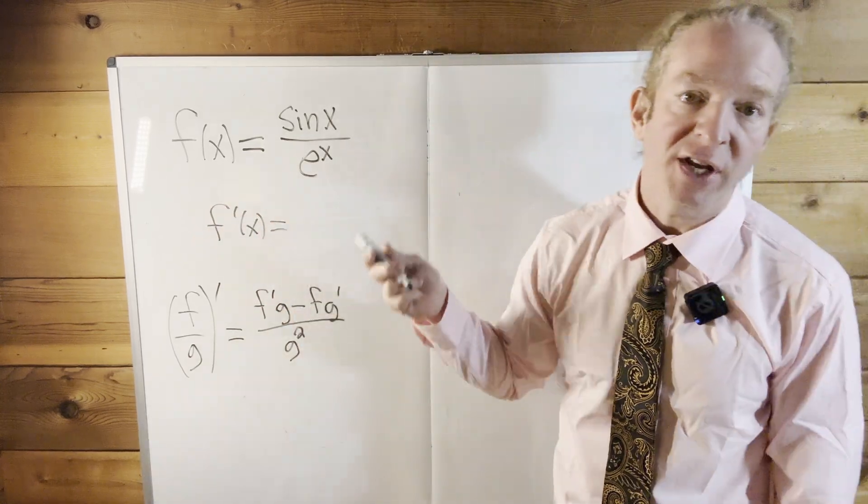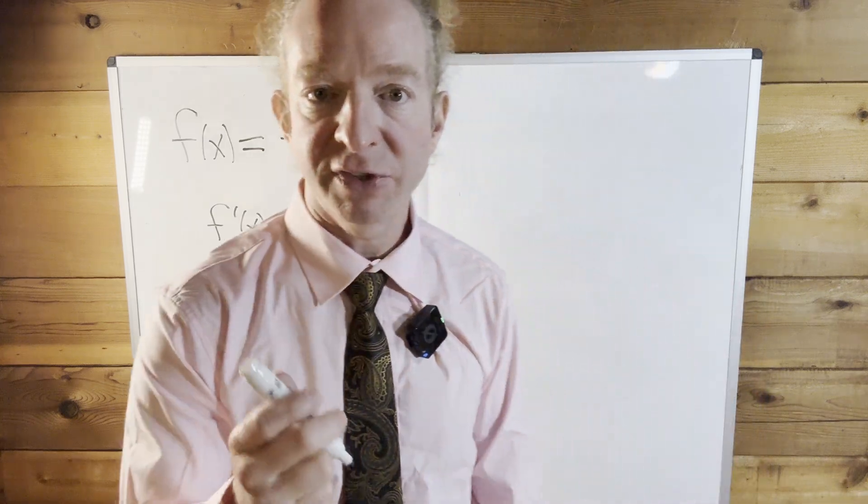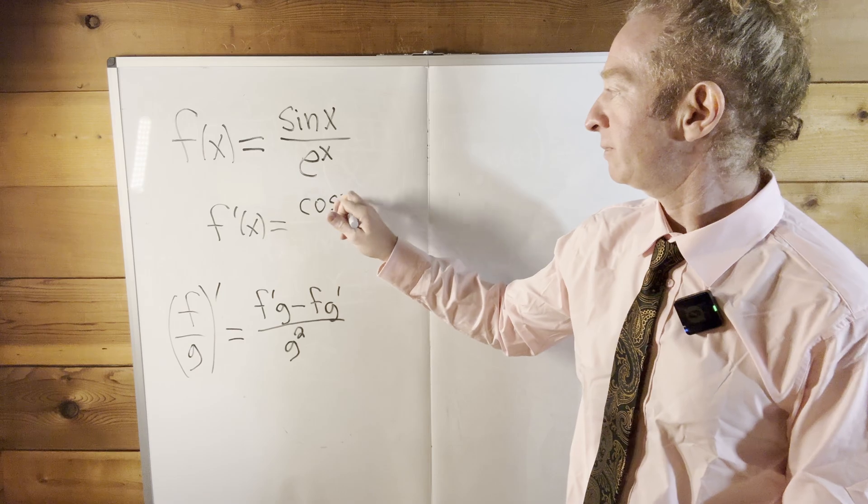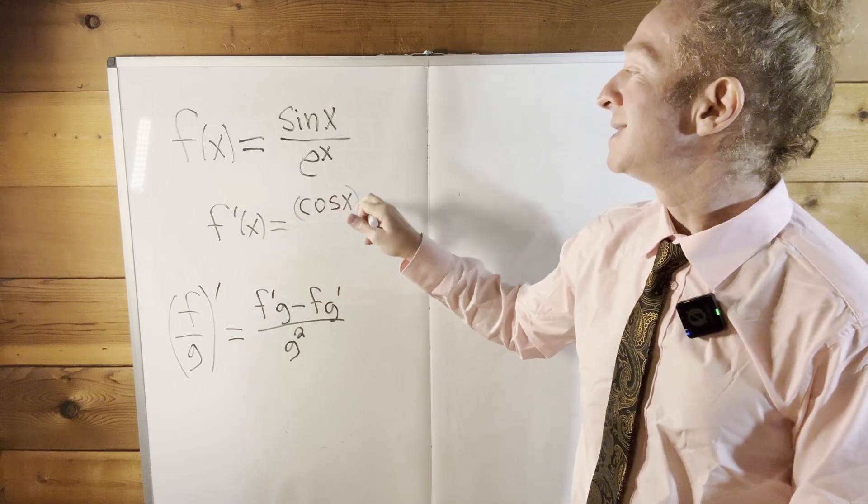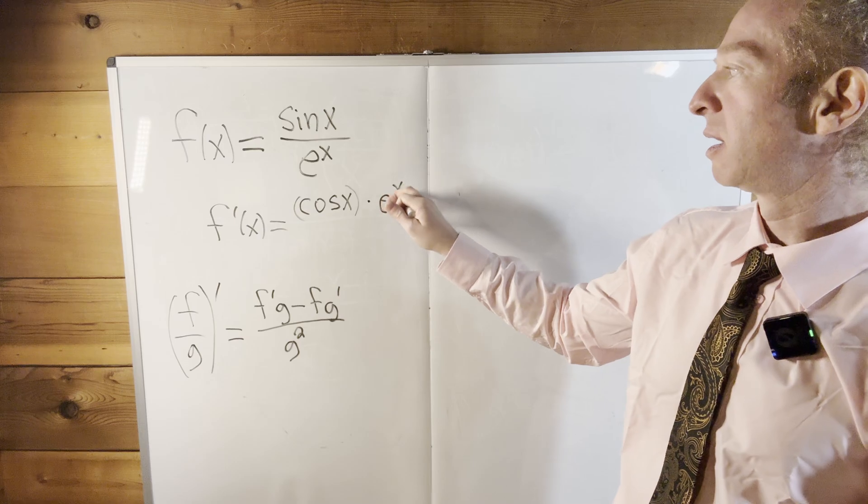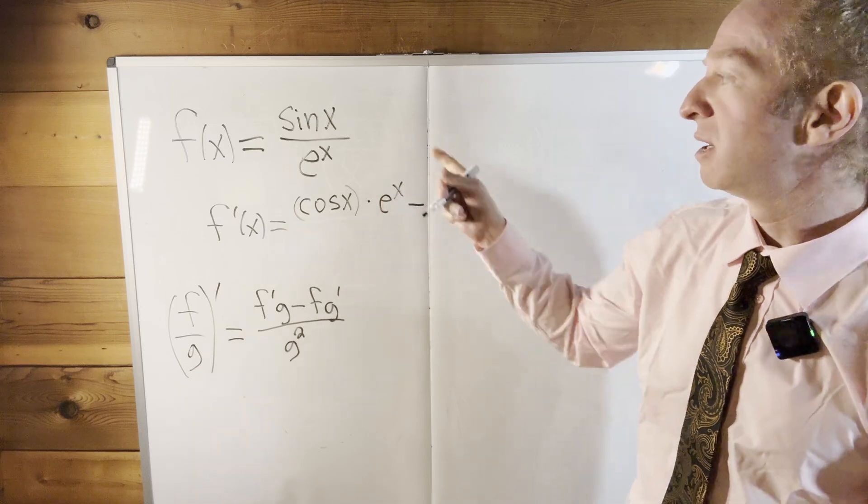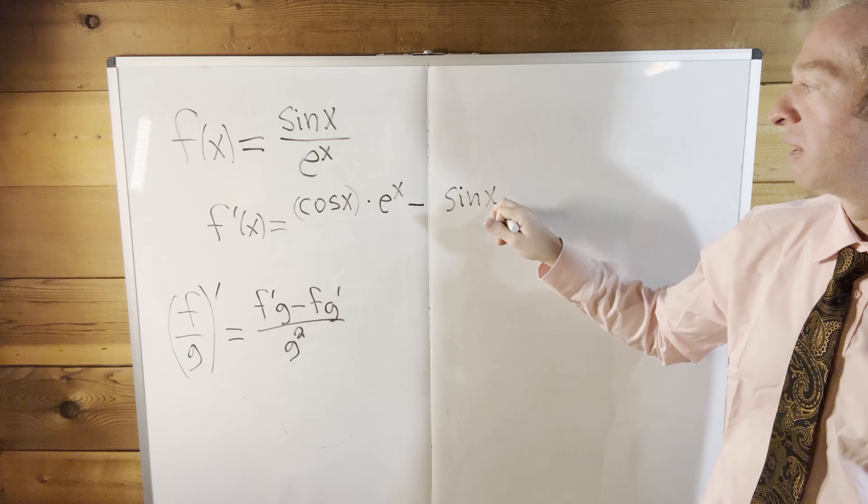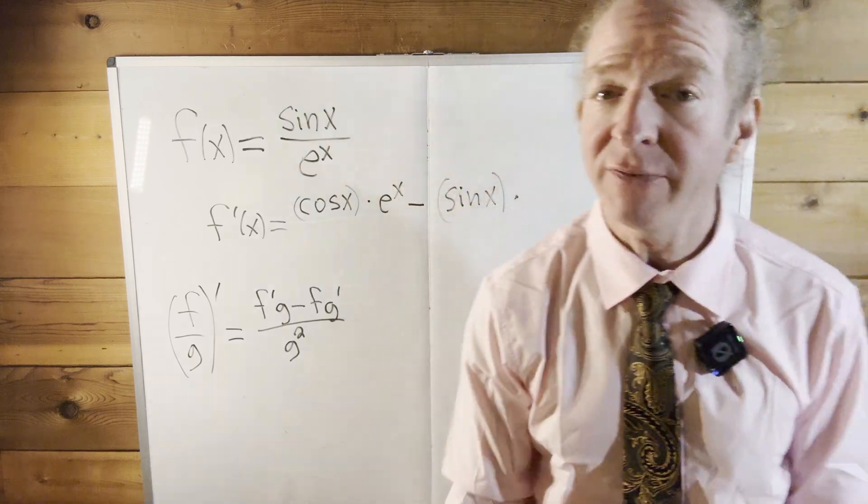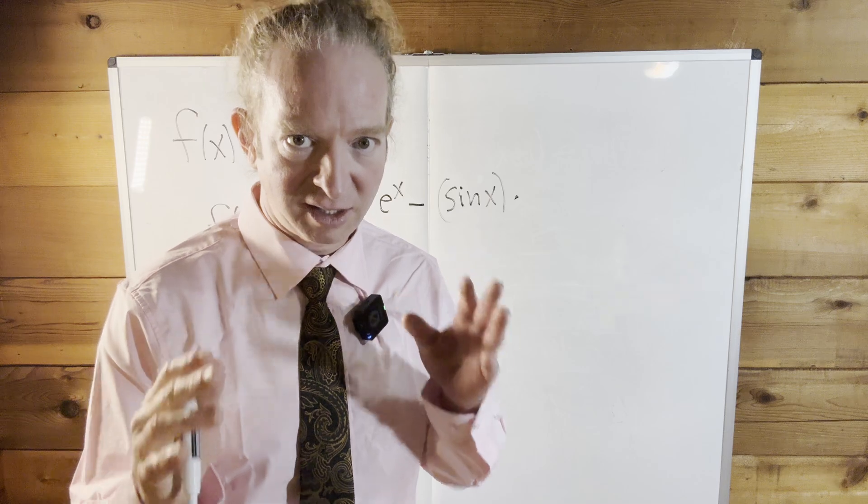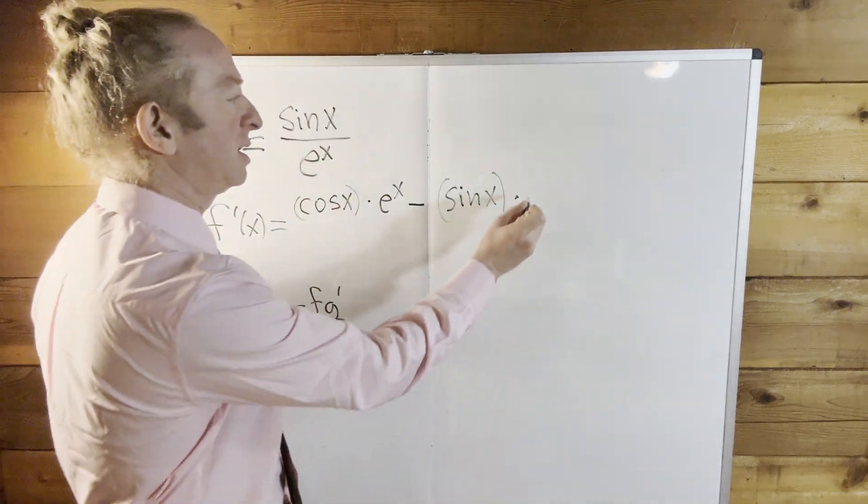it's the derivative of the top. So the derivative of the sine function is cosine. So this will be cosine of x times the bottom, so e to the x, minus the top. So sine x times the derivative of the bottom. So the derivative of e to the x is e to the x.